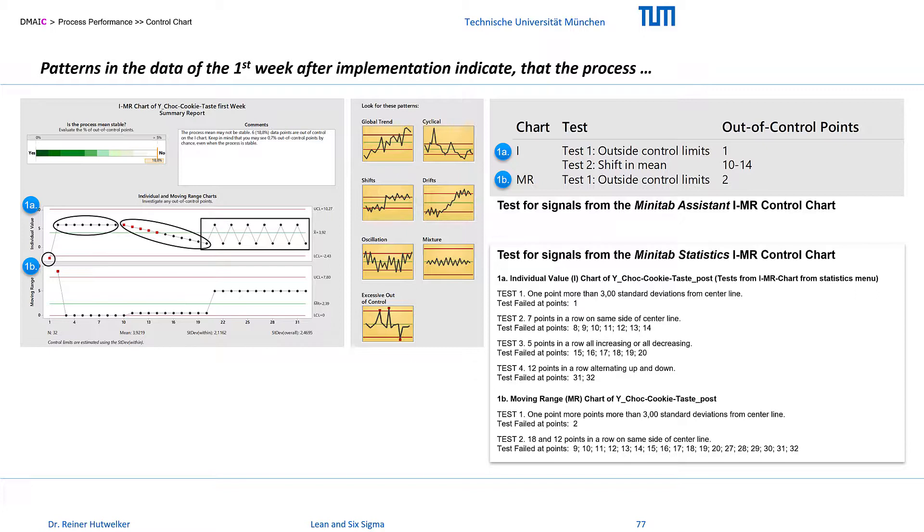For the moving range chart, test 1 also indicates an extreme value in both control charts. Here the large difference between the invalid value and the subsequent valid value is displayed as an outlier.